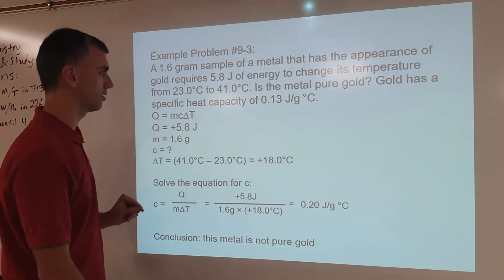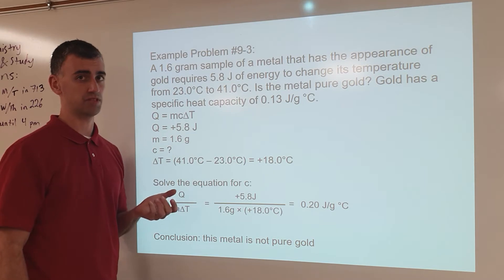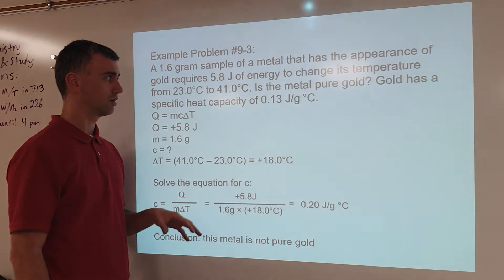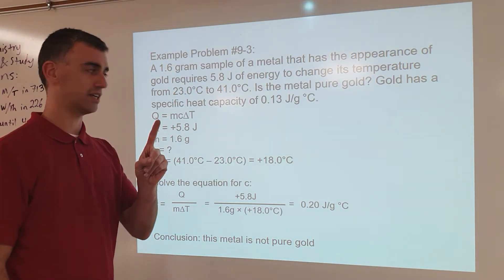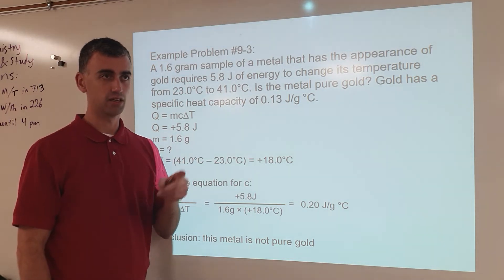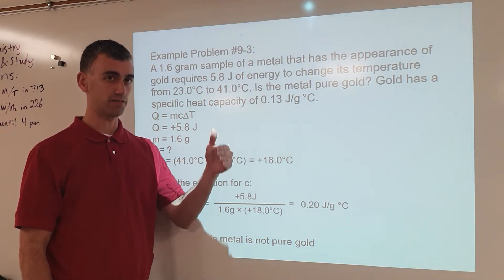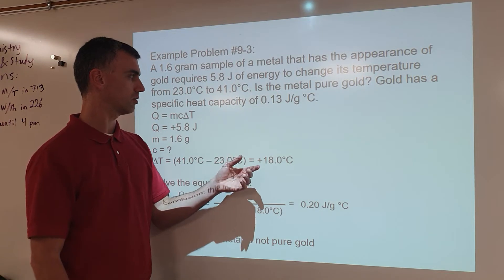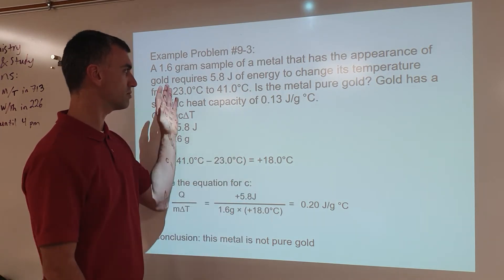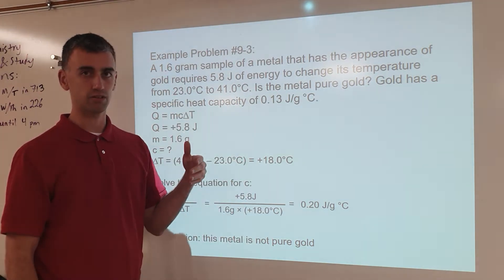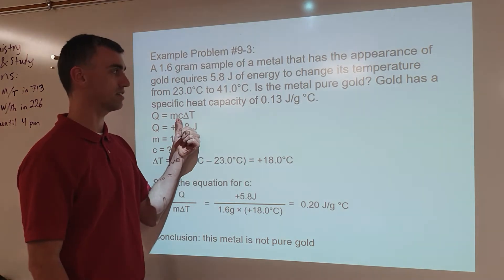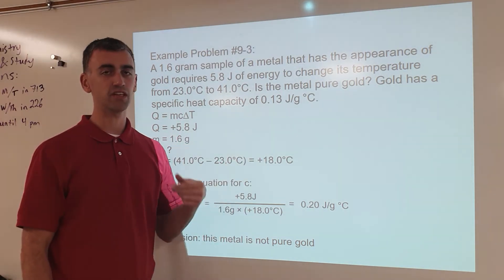So what's going on here is it's making a couple of assumptions that we need to be aware of. Assumption number one, the main one, is the assumption that different materials have different specific heat capacities. So the assumption is that if this material, when you solve for c to find out what the specific heat capacity is, if it matches the specific heat capacity of gold, it must be gold.